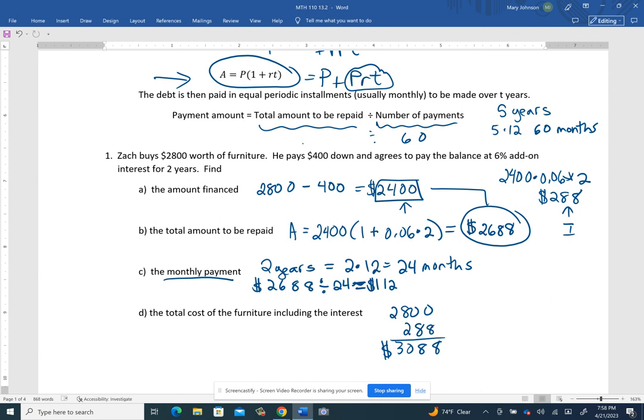But you might think about it this way. This 2688 is the amount you have to repay. So it's the 2,400 plus the interest. What's missing from that is the down payment. You put 400 down. So the furniture, total cost of the furniture wasn't just 2,800. It wasn't just 2,688. It was really 3,088.